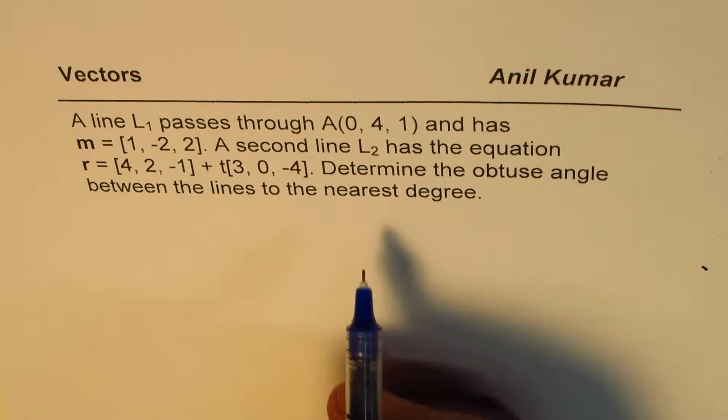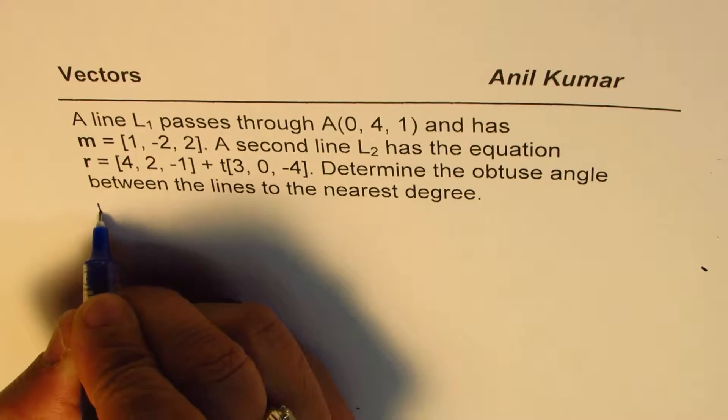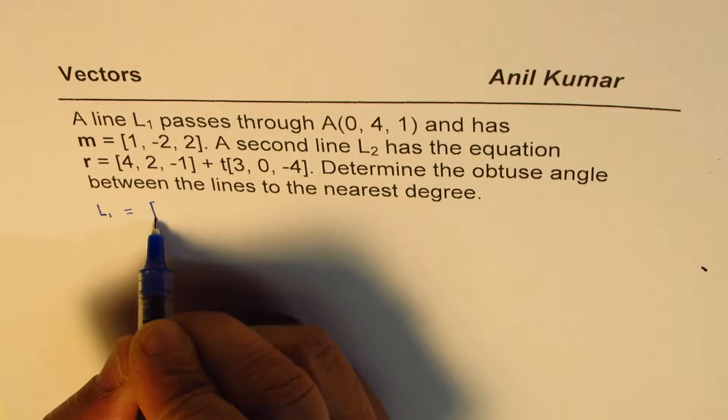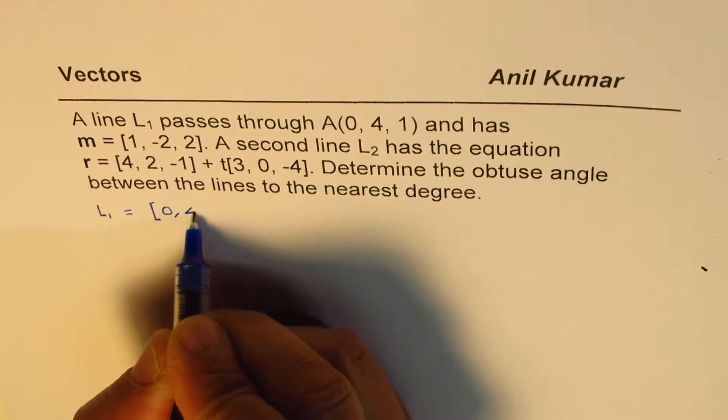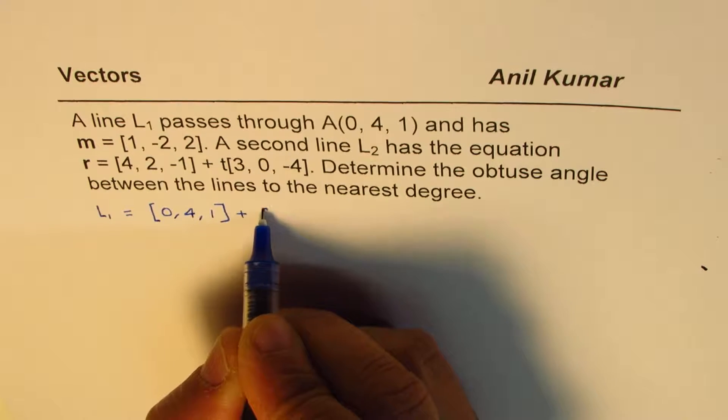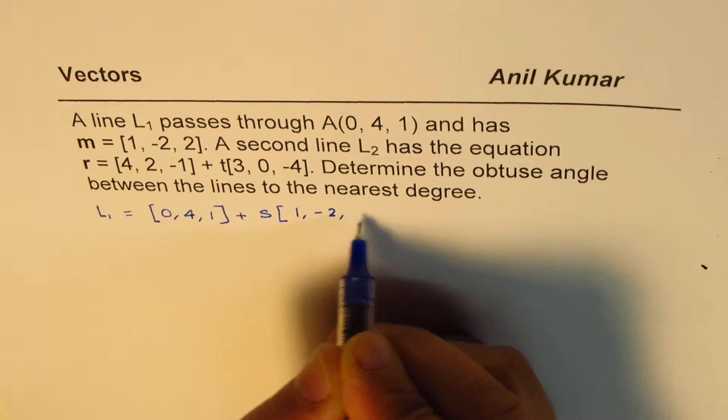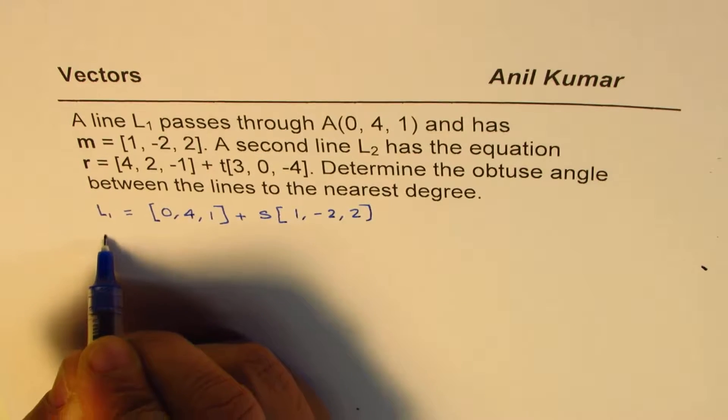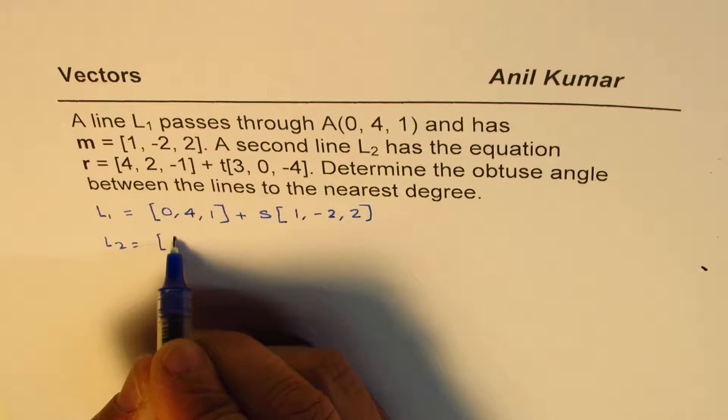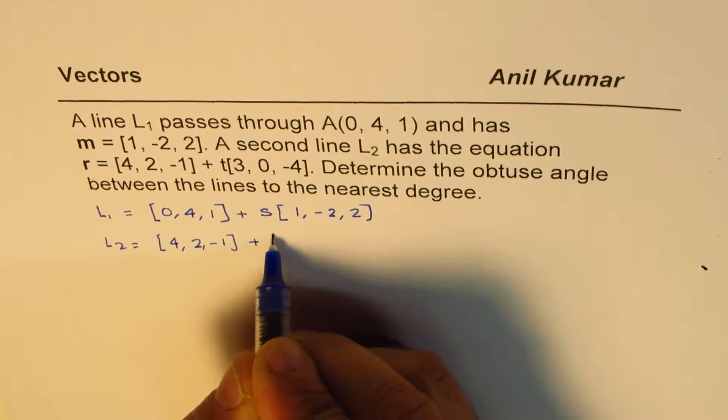So let's rewrite the equation for the lines first. Line 1 is going through this position vector (0,4,1). So we could write this as S times the direction (1,-2,2) for line 1. For line 2, the equation is given us in vector form already which is, as I have written here.